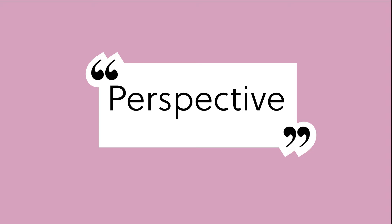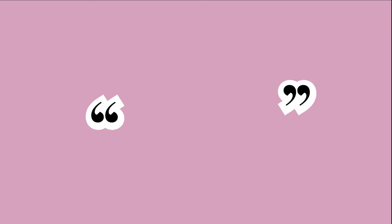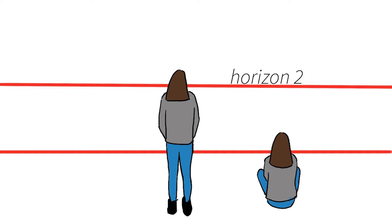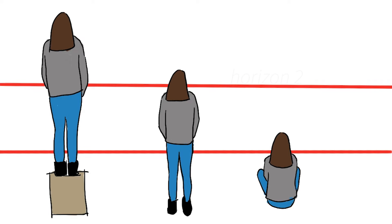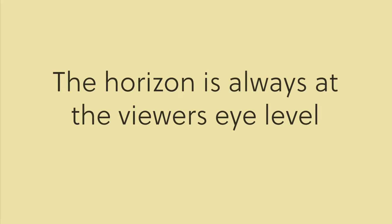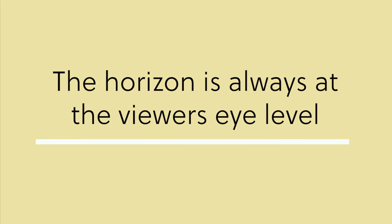To understand perspective, we need to understand what happens to the horizon line as we move about. It doesn't matter what our position is, the line will always be at the viewer's eye level, as the diagram shows.